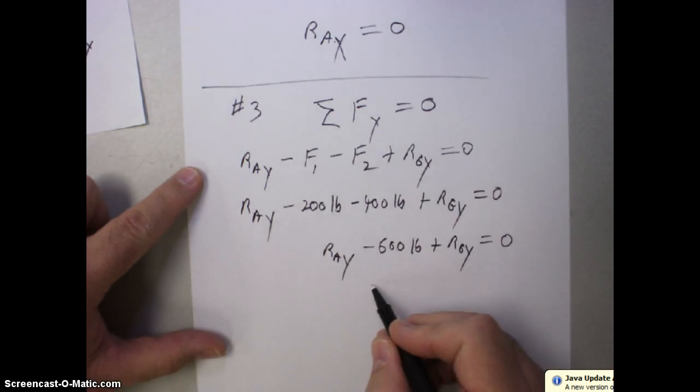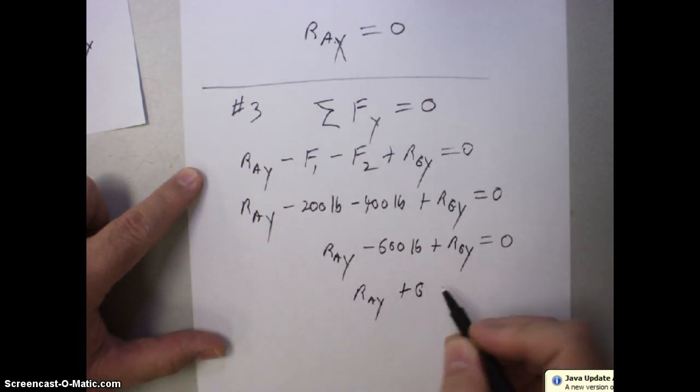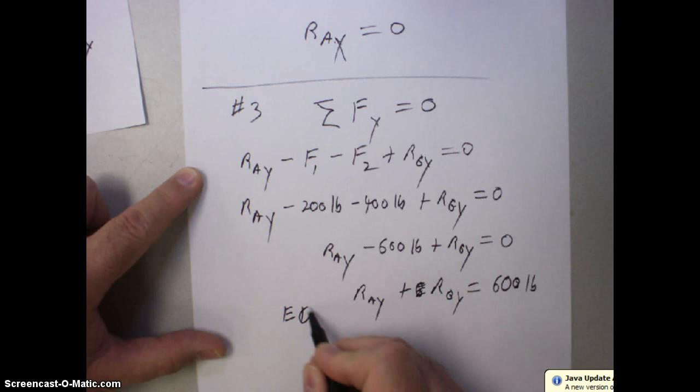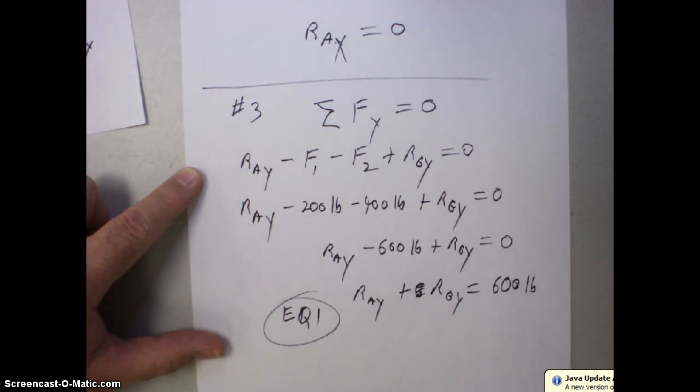RAY minus 600 pounds plus RGY equal to zero. So, simplified here, we're going to have RAY plus RGY equals to a positive 600 pounds. And we're going to call that equation one because we're going to look at that later.